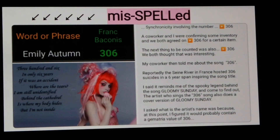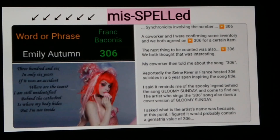This next one blew my mind. I was at work and had a synchronicity involving the number 306 — a co-worker and I were confirming inventory and we both agreed on 306 for a certain item, and the next item counted was also 306. My co-worker then asked if I'd ever heard of the song '306' by an artist known as Emilie Autumn. Apparently the song was inspired by 306 suicides over six years in a river in France. I said it reminded me of the spooky legend behind 'Gloomy Sunday.'